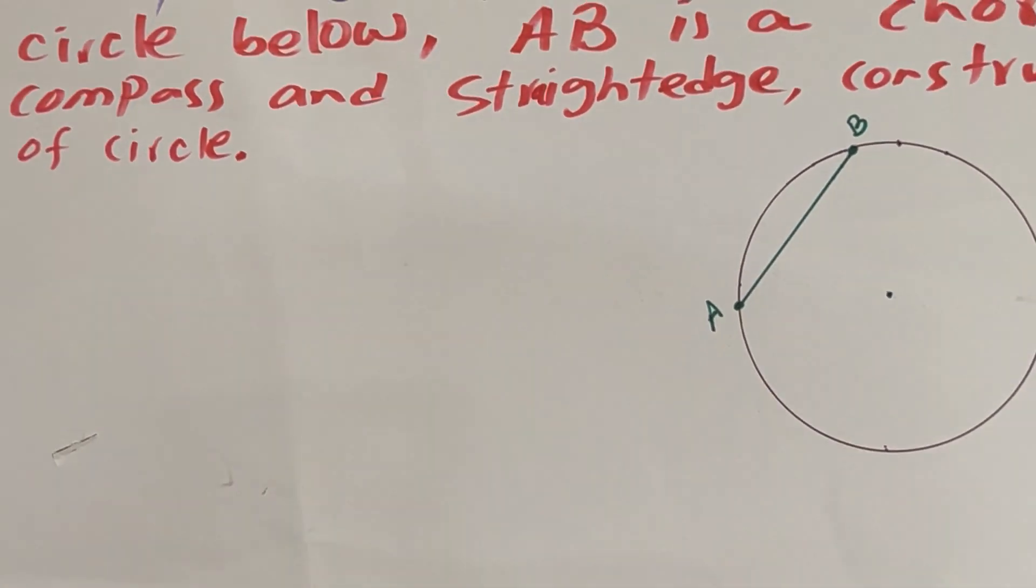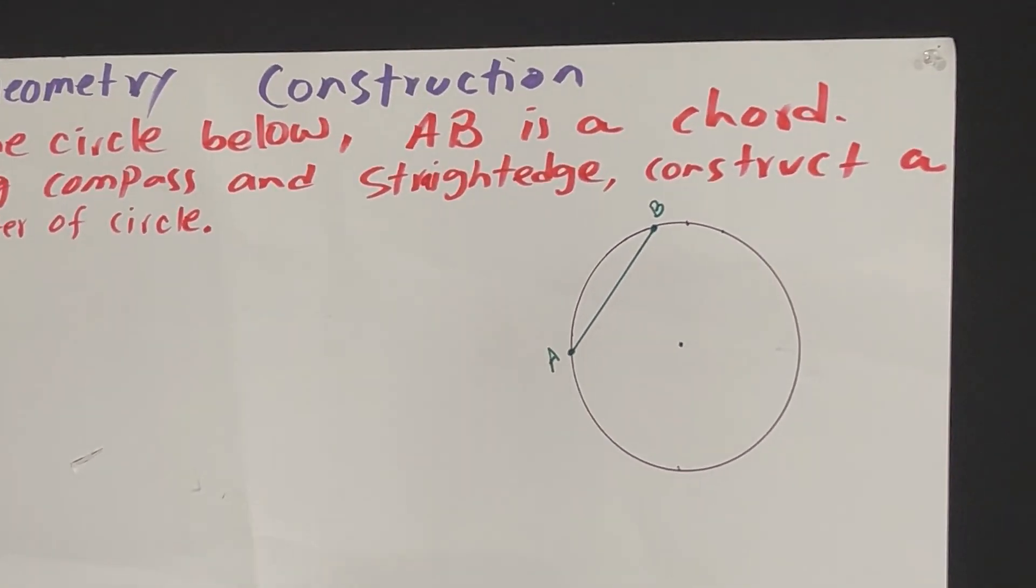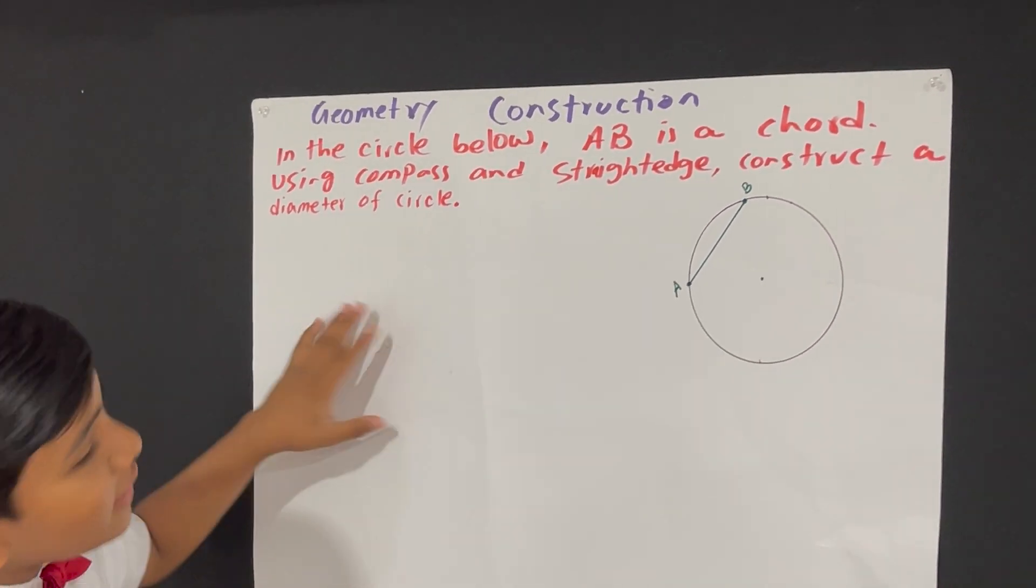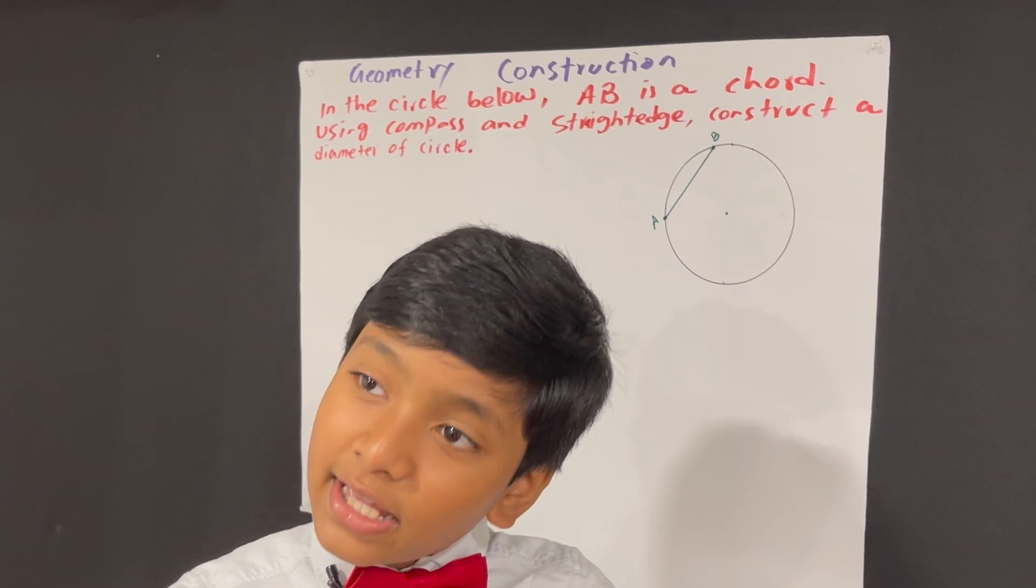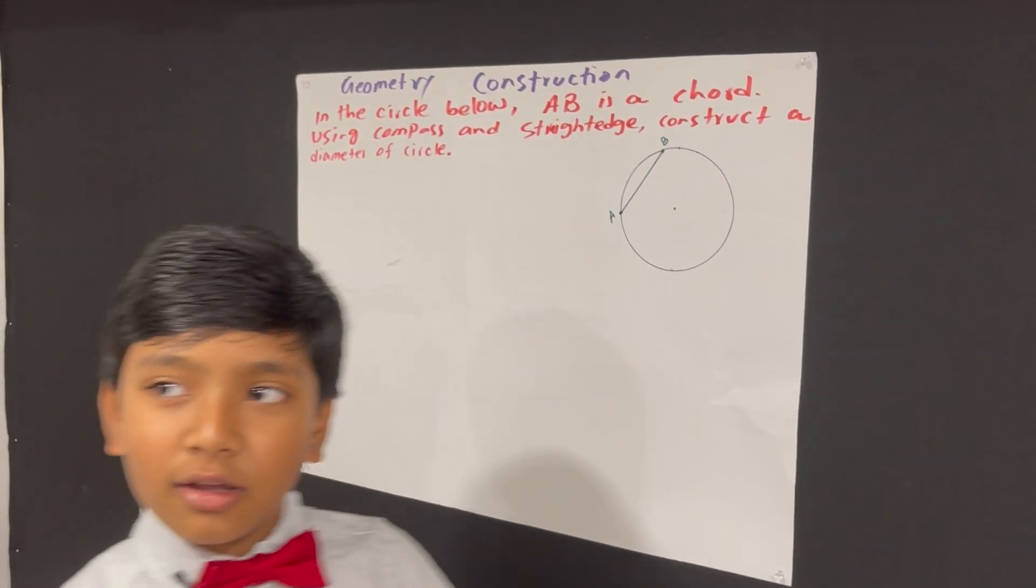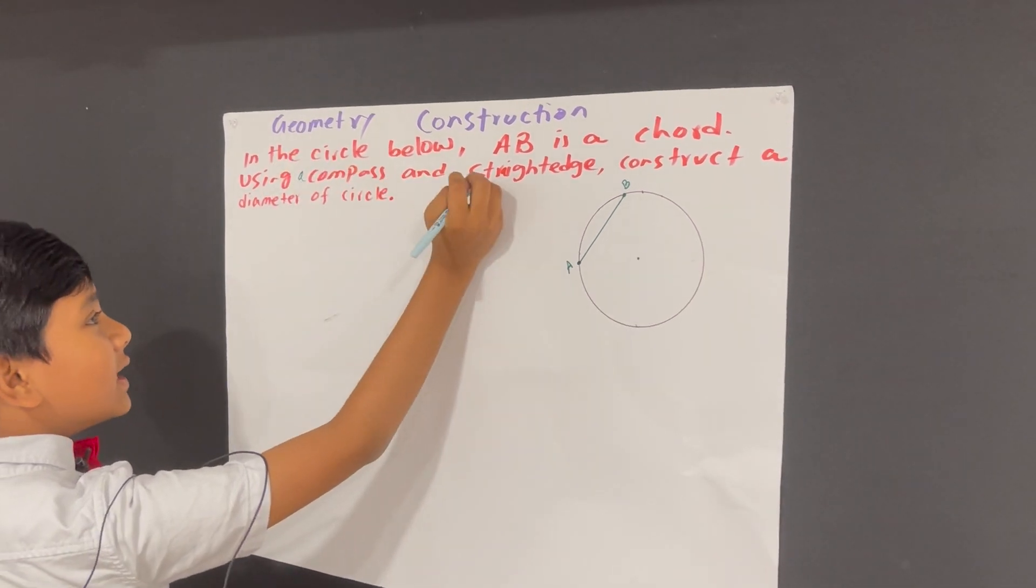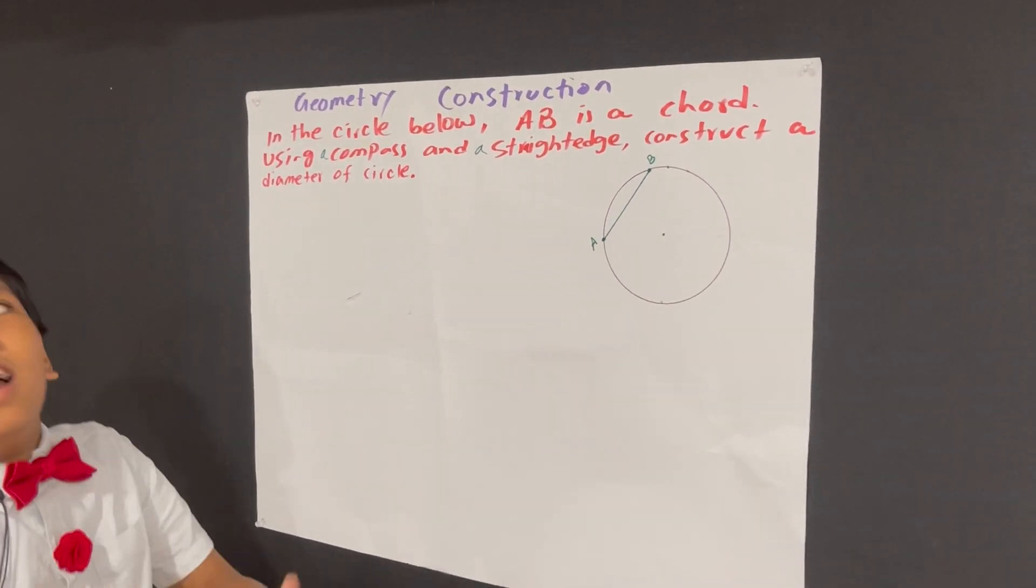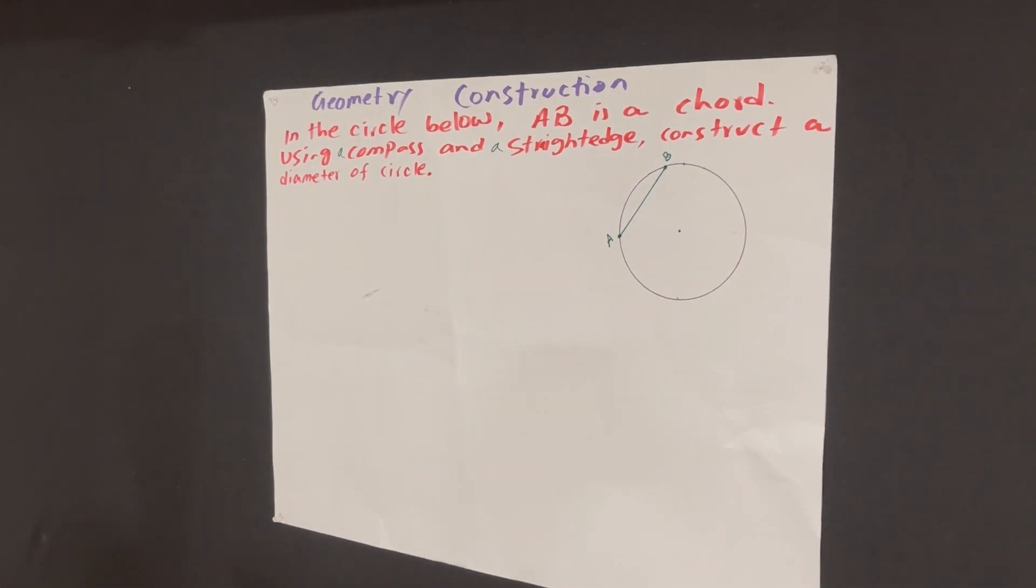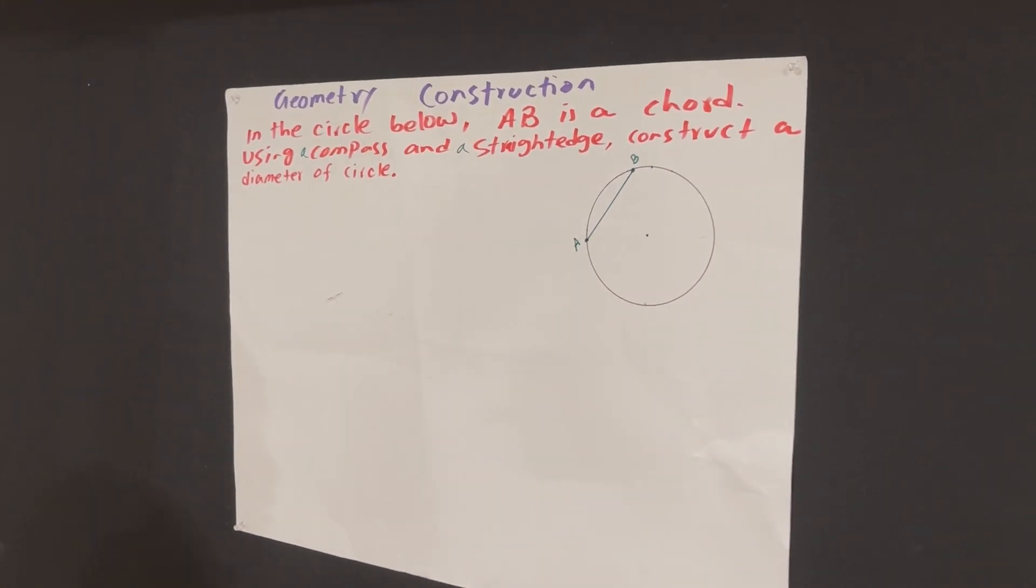AB is a chord. Using compass and straight edge. Oh man, what kind of idiot even wrote this? Doesn't know a single thing about grammar. Using a compass and a straight edge, construct a diameter of circles.